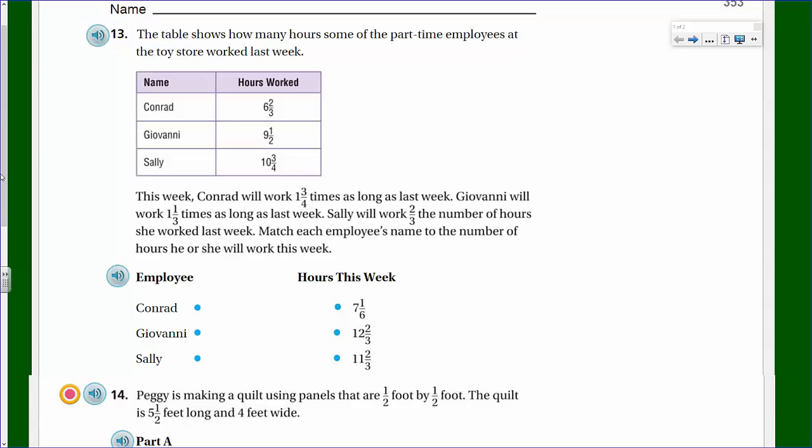We have a question up here. It says, number 13: The table shows how many hours some of the part-time employees at the toy store worked last week. Conrad worked 6 and 2/3, Giovanni 9 and 1/2, Sally 10 and 3/4. This week, Conrad will work 1 and 3/4 times as long as last week. Giovanni will work 1 and 1/3 times as long as last week. Sally will work 2/3 the number of hours she worked last week. Match each employee's name to the number of hours he or she will work this week.